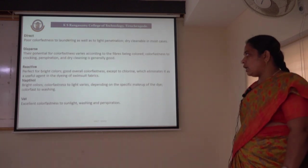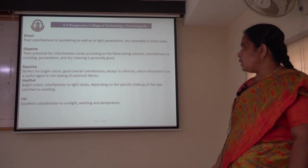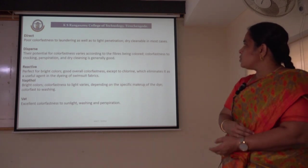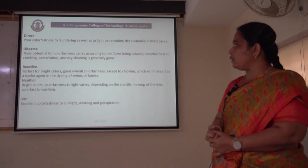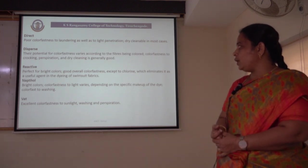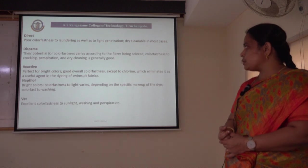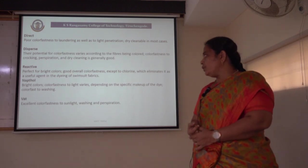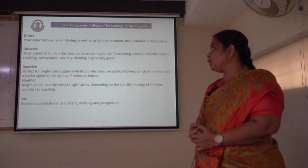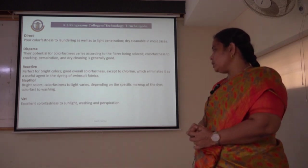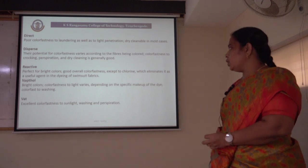Next comes direct dye — it has poor colour fastness to laundry as well as to light penetration, and is dry-cleanable in most cases. As this dye has poor fastness to washing and light, dry cleaning is the only way to retain good fastness. Coming to disperse dye, which is the only non-ionic dye — the potential for colour fastness varies according to the fibre being coloured; fastness to crocking, perspiration and dry cleaning is generally good. The reactive dye is the only dye which forms a covalent bond with the textile substrate — it is perfect for bright colours with good overall colour values, except to chlorine.